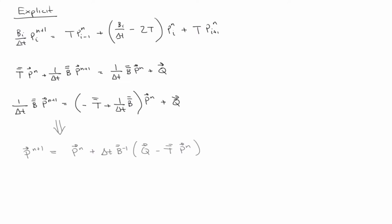So in other words, if B is B1, B2, B3, then B inverse is just one over B1, one over B2.